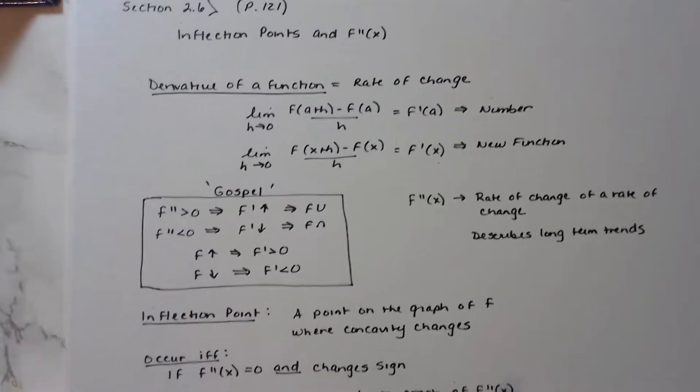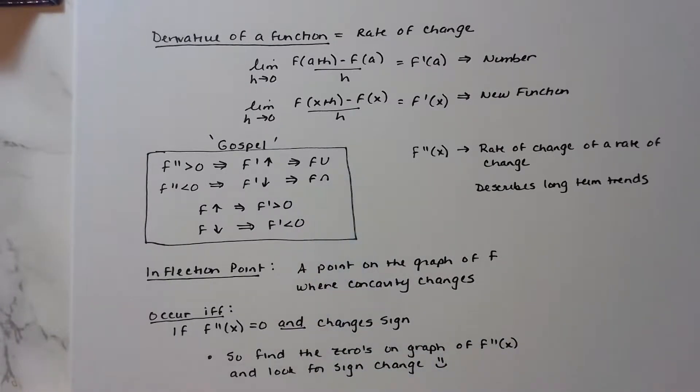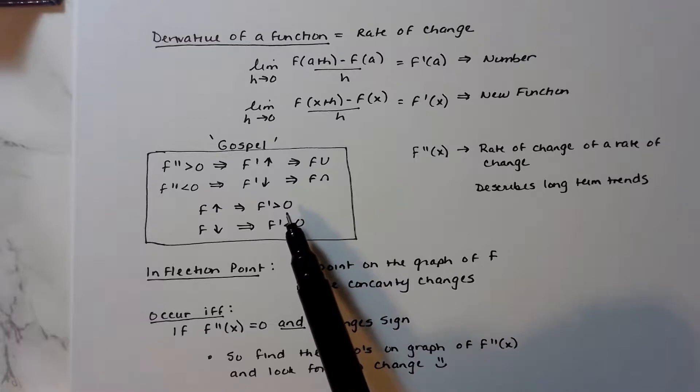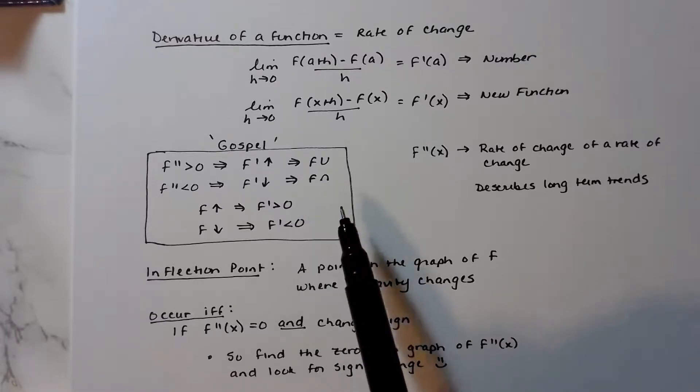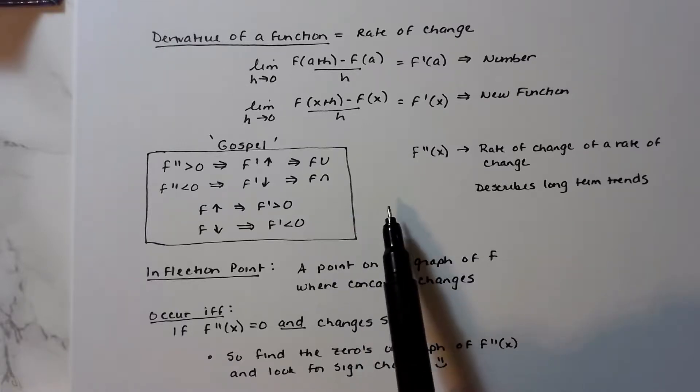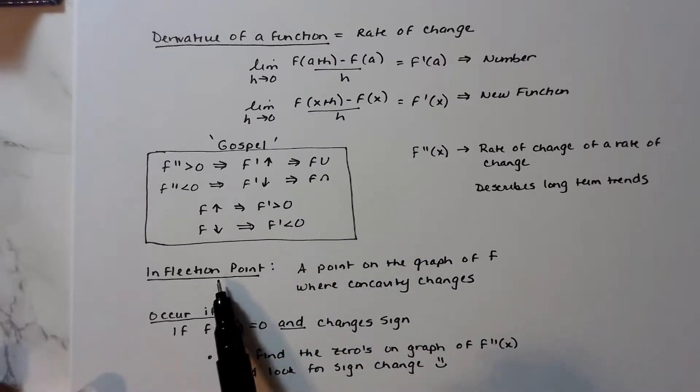Let's not forget this little deal here, because even though we're not going to curve sketch anymore from pretty much this point on, we are always going to interpret graphs. What I want you to notice is the second derivative is a rate of change of the rate of change function, and it describes long-term trends. It's also useful for finding inflection points, and that's just a place on the graph of a function where the concavity changes.